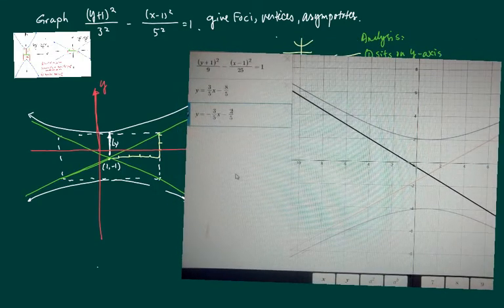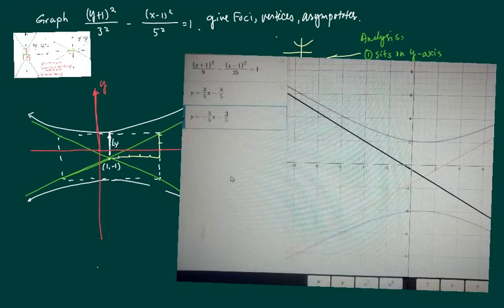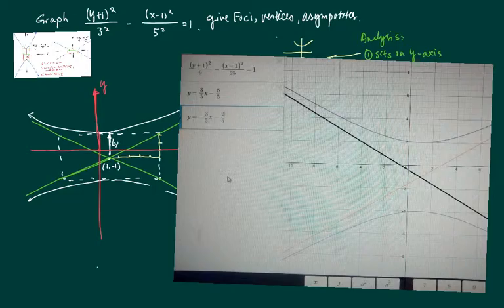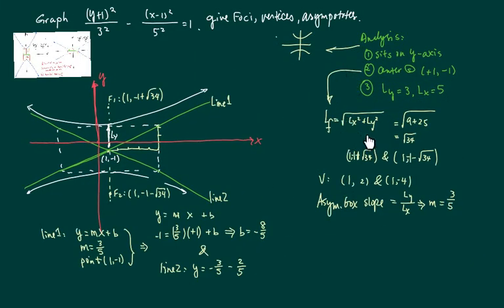Now as far as the vertices and the foci and asymptotes, those are pretty easy. So next let's look at how to graph them. Alright, so the rest of the stuff is pretty easy to find. To find the focal length from the center, we're going to add length on X squared plus length on Y squared, and then we're going to take square root of that. That happens to be the square root of 34.